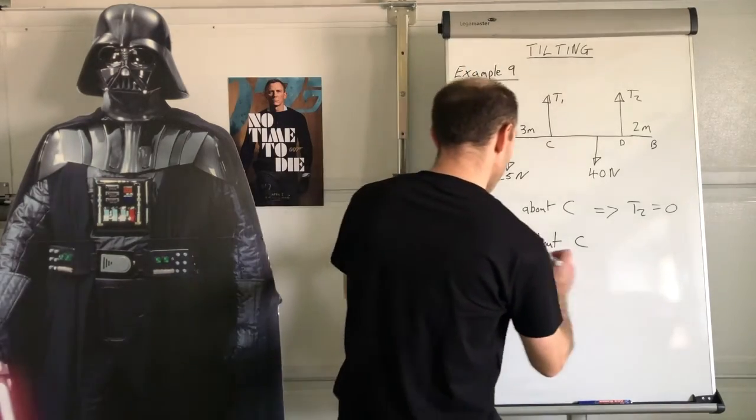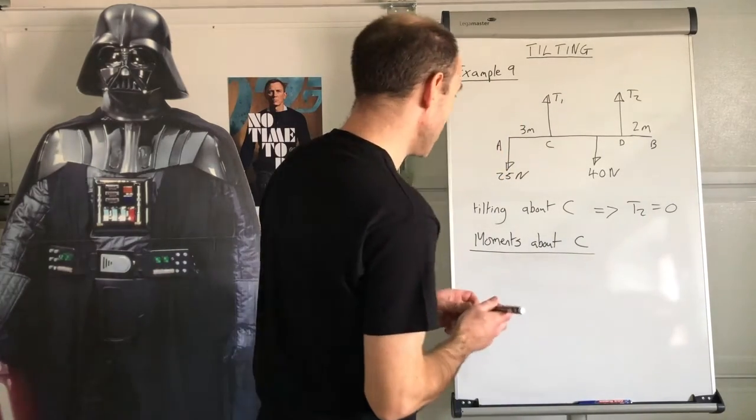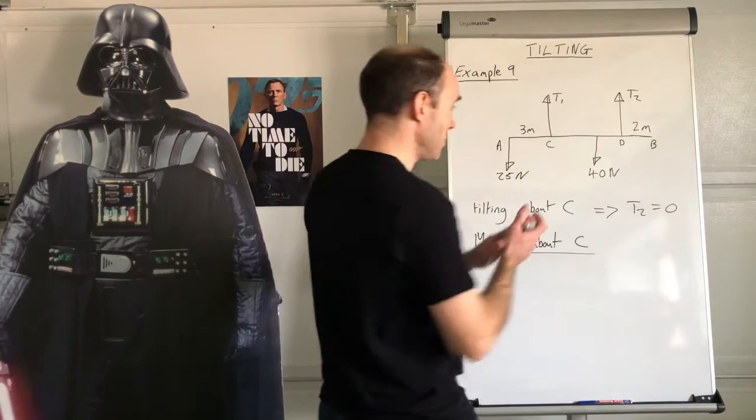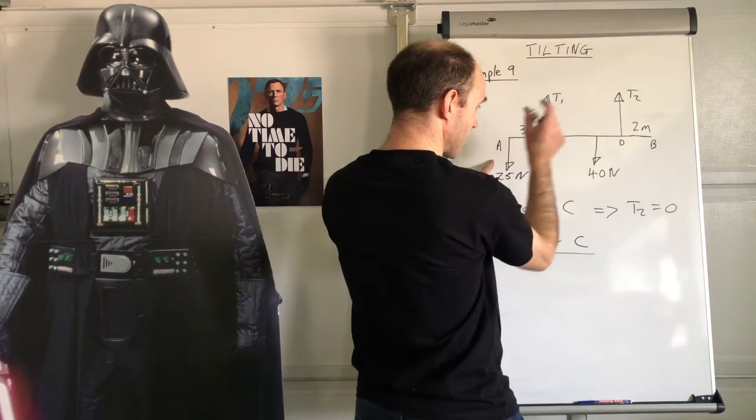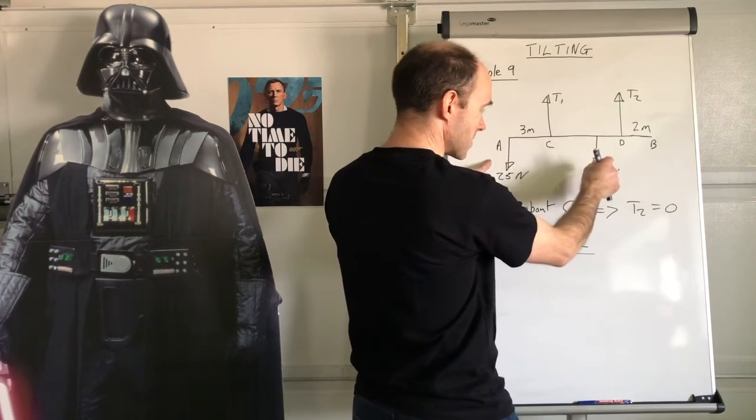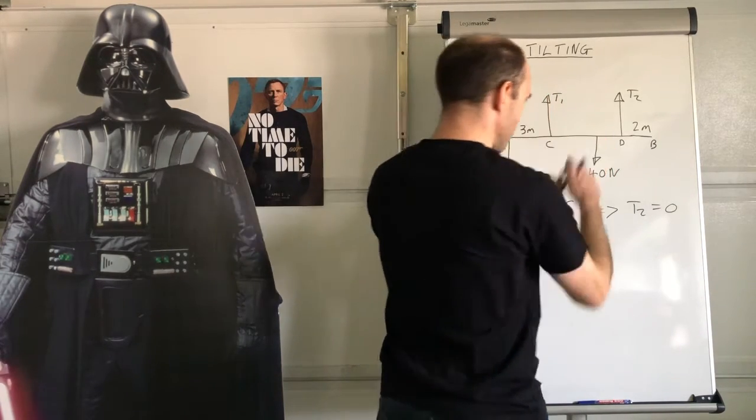So moments about C. And then let's do that. Now, as with previous example, if I take moments about C, I've only got two moments to consider, that one and that one. So I could say that subtract that equals zero, but this time I'm just going to go straight for this one is equal to this one.